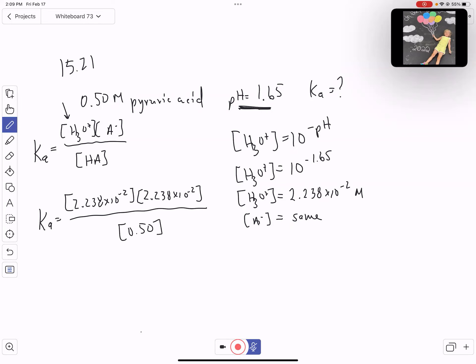Remember, with all these weak acids, some of this ionizes, but we're safe in assuming that our initial concentration is very close to our equilibrium concentration. We don't have to worry about subtracting an amount of x there. I'm going to square that and divide by 0.5, and I get a Ka of about 1.0 times 10 to the minus 3 for pyruvic acid.